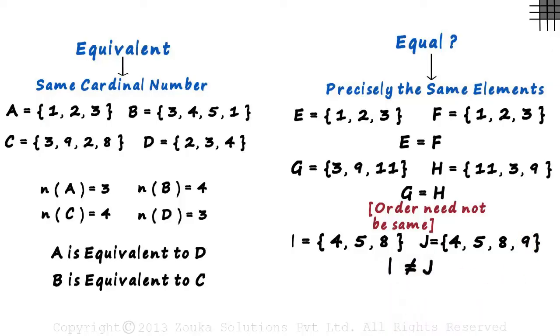Remember, for sets to be equal, their cardinal numbers also have to be the same. In this case, n(I) is not equal to n(J), which makes the sets unequal. When I say precisely, this is what I meant. Same elements and the same number of elements.